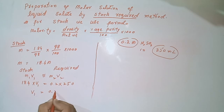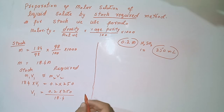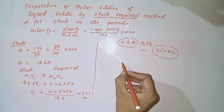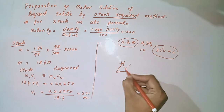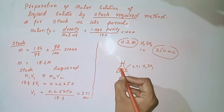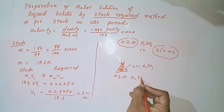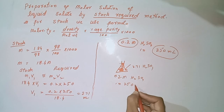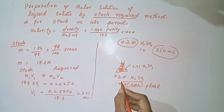Dividing both sides to solve for V₁, we calculate the answer as 2.71 ml. First, we take a 250 ml flask and add 2.71 ml of H₂SO₄ into it. Then we add a small amount of water, and finally add water up to the mark. This gives us a 0.2 molar H₂SO₄ solution in a 250 ml flask, which is the required solution.